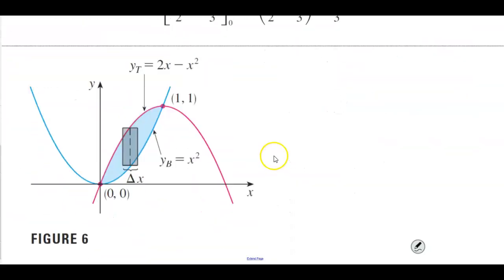One way is by graphing both curves. When you graph them, whether on Desmos or using your calculator, you'll notice that the first function, 2x minus x squared, is the region that's above, and the region below is y equals x squared.